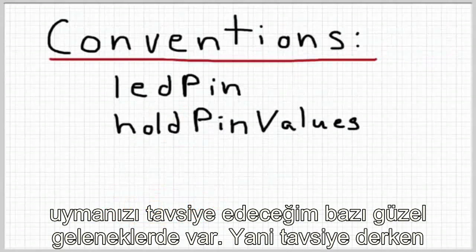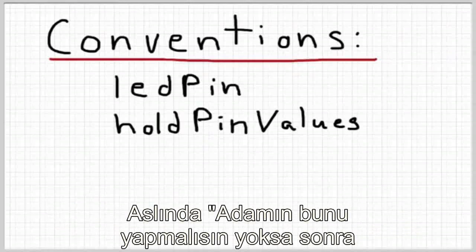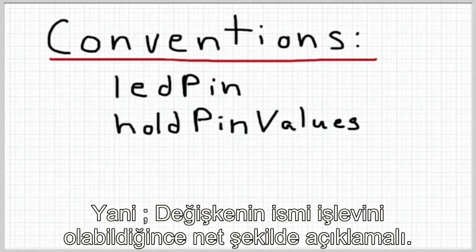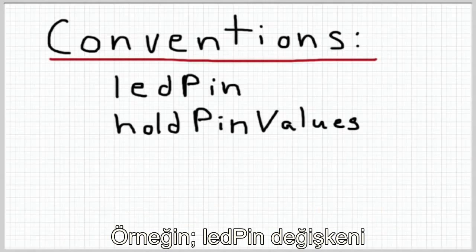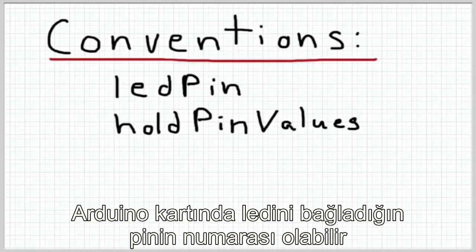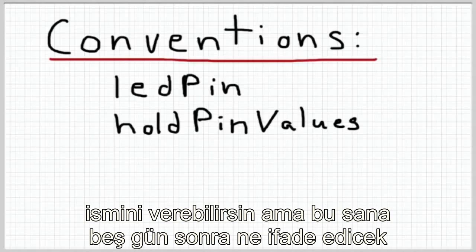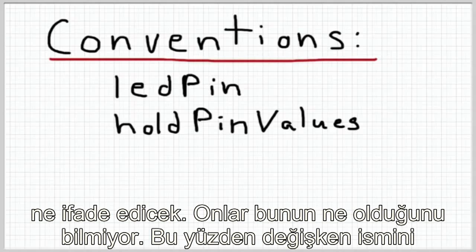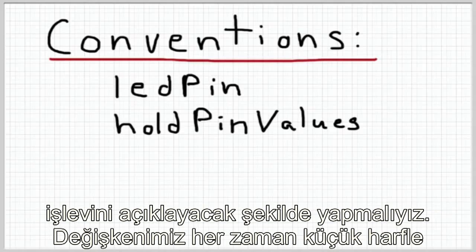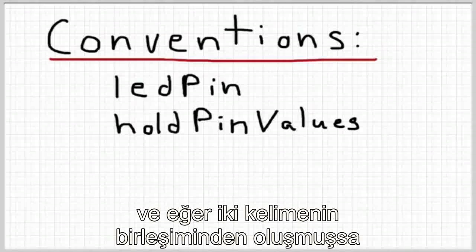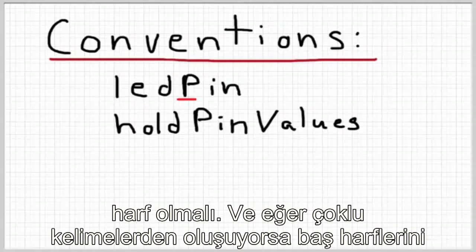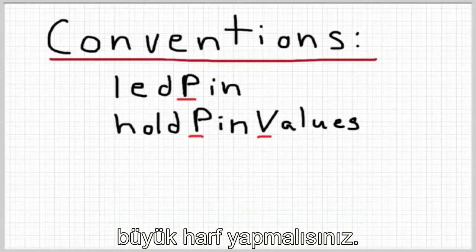In addition to those restrictions, there are a couple of good conventions to follow. The variable name should be as descriptive of its function as possible — for example, 'ledPin' could be the pin number you put your LED on. You could name that variable 'mom', but what does that mean to you five days from now? Try to make the name descriptive of its function. You should always start your variables with a lowercase letter, and if your variable name is two words connected together, capitalize the first letter of the second word — this is called camelCase.